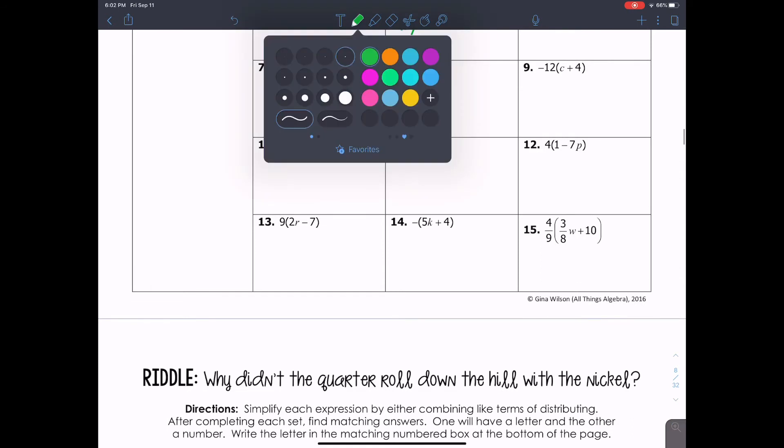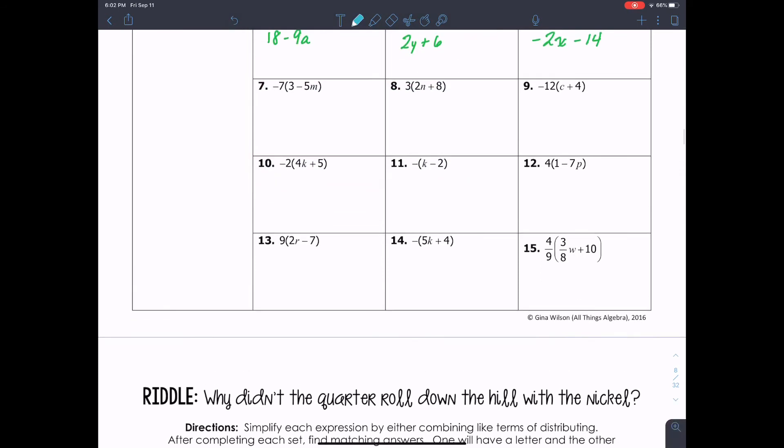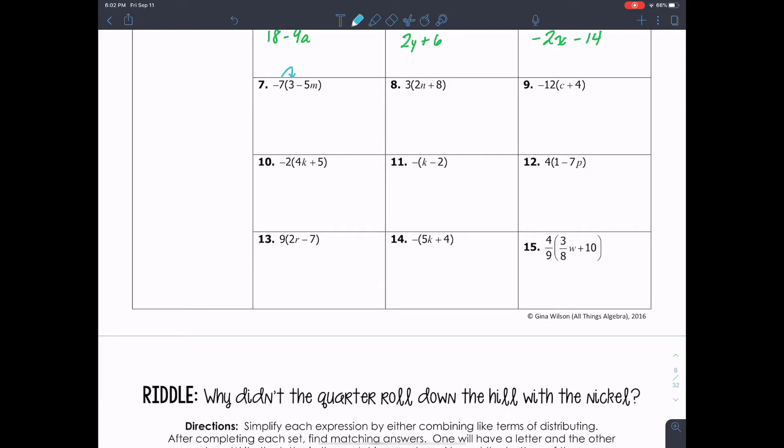I told you, you should have paused so that now you can be checking your work. So here is where it starts picking up. Negative 7 times 3 is negative 21. Negative 7 times negative 5M is 35M. And notice what I did. It's a positive. Because a negative times a negative is a positive. So make sure you have that down. 3 times 2 is 6N. 3 times 8 is 24. I have negative 12 times C to give me negative 12C. Negative 12 times 4 to give me negative 48.